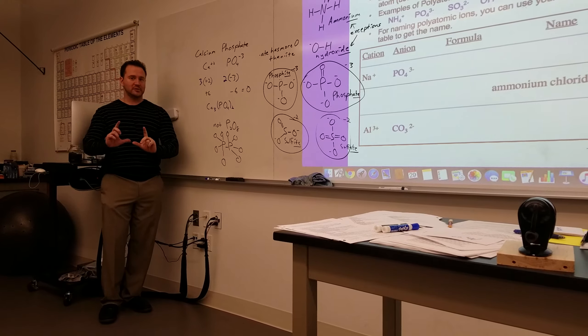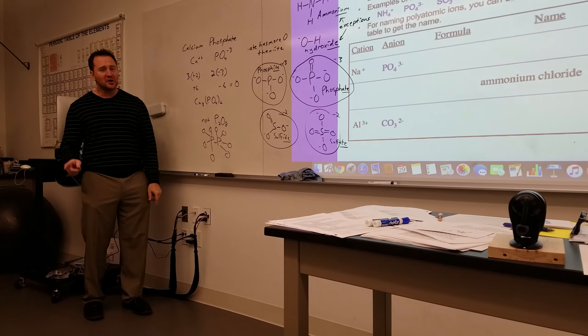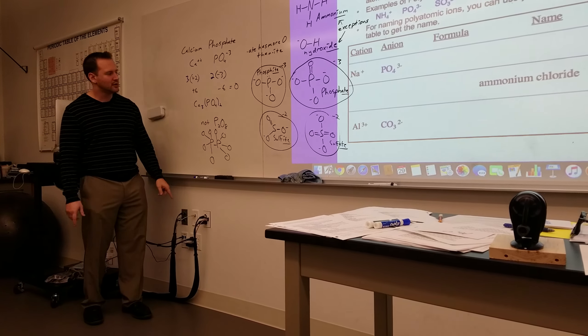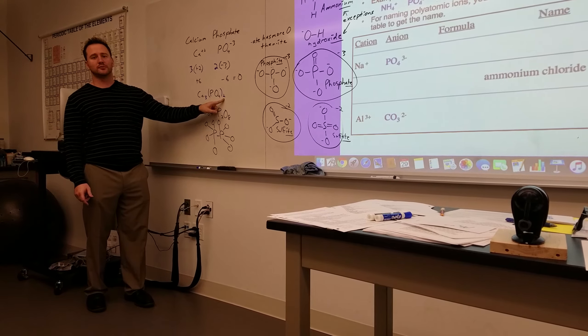Here is where a very common mistake happens. People constantly try to distribute this two. No, no, no, no, you can't do that. If you want to say you have two phosphates, you put parentheses around it, and then put the subscript two.